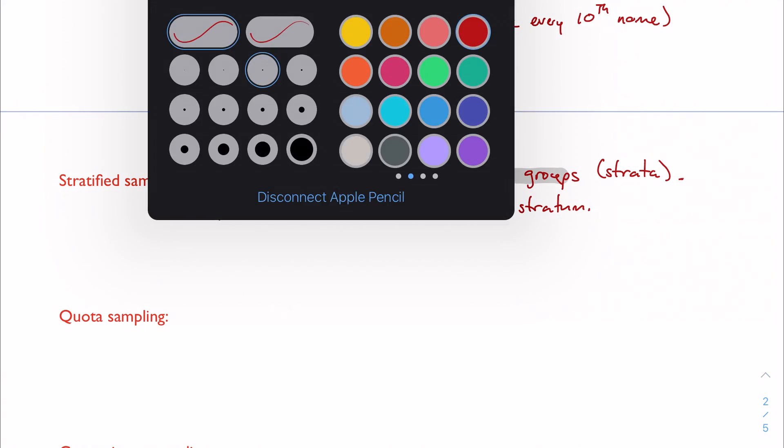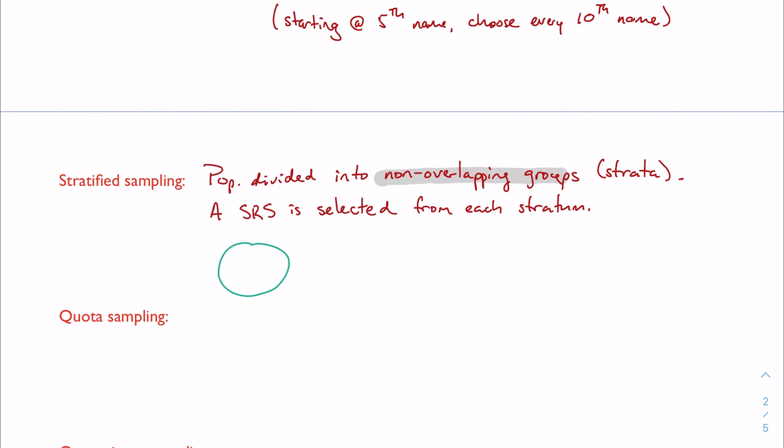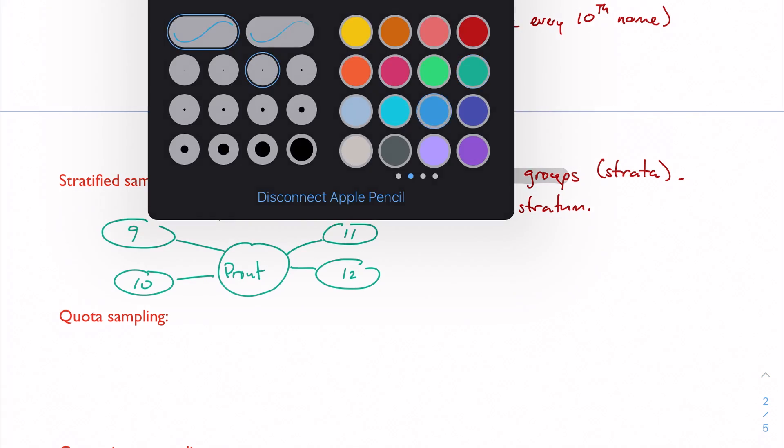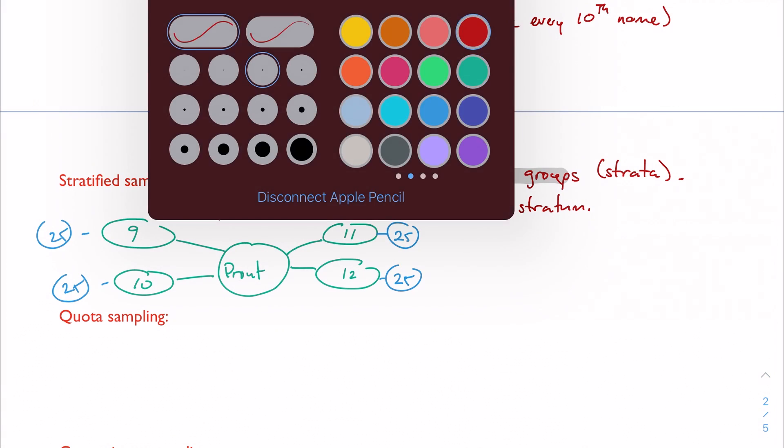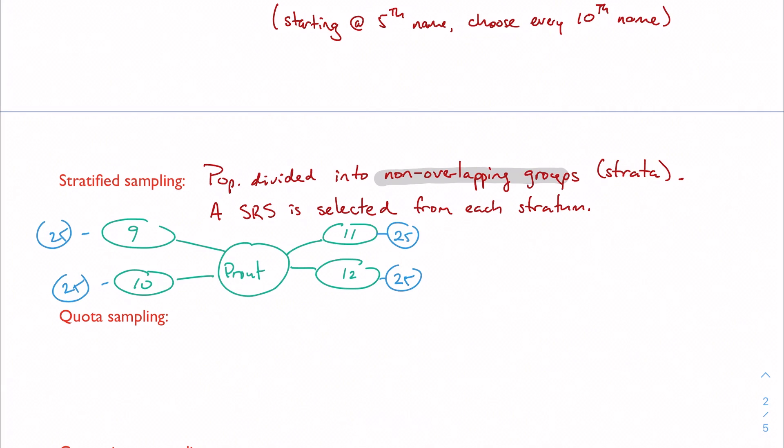So it looks something like this. Maybe I have the Prout student body and I want to sample the whole student body. But in order to be fair, I'm going to split up my student body by grade. So I'll look at ninth grade, 10th grade, 11th grade and 12th grade. And then from there, I'll select maybe 25 students. So I've kind of been fair here, right? I've made sure that every single class is represented fairly. And I'm doing this to make sure that I actually get a pretty even representation of my population.